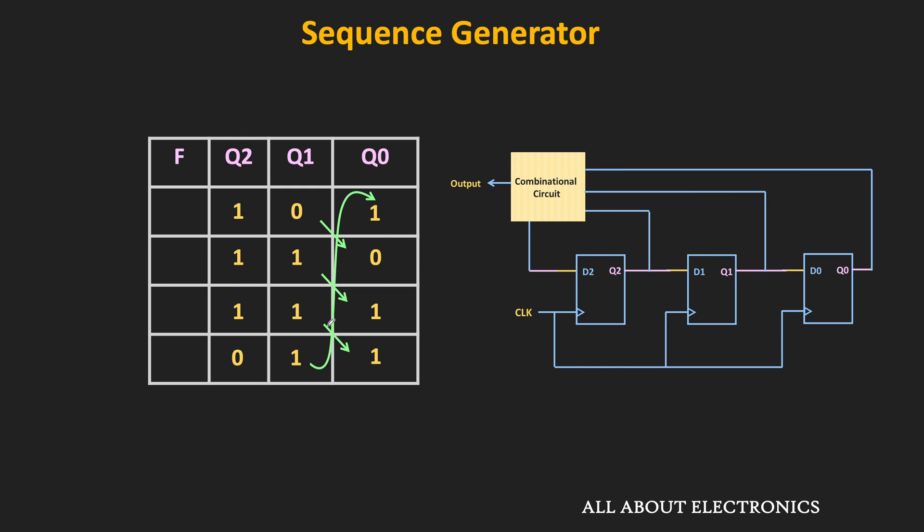Once we get the different states, we should check that no state in the output is repeating. In this case, the 1st state is 101, the 2nd state is 110, the 3rd state is 111, and the 4th state is 011. All 4 output states are different. But if we have repetitive states in the sequence, then we need to add one more flip-flop and repeat this step again. In this case, since all 4 output states are different, there is no need to add an additional flip-flop — we can generate the required sequence using 3 flip-flops.